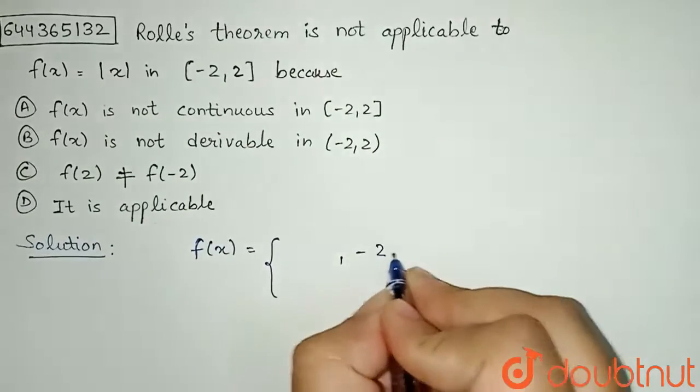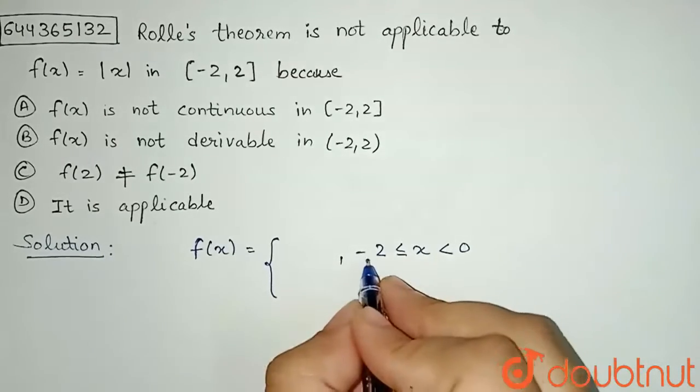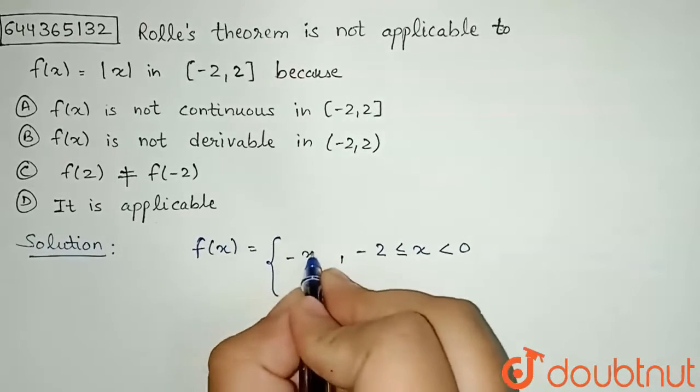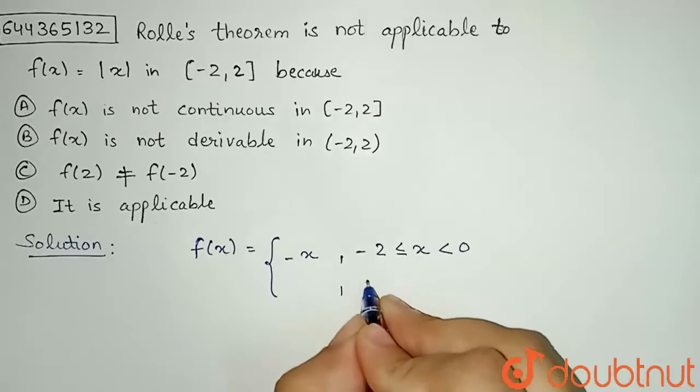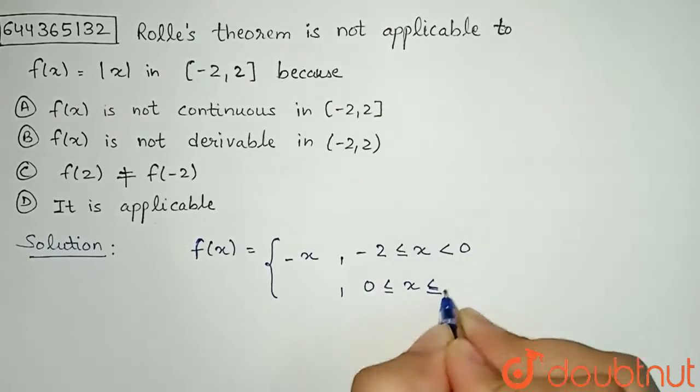So what I can do? One interval, I can have minus 2 to 0. Since x is negative, so mod will open with a negative sign and the second interval, I can have from 0 to 2.